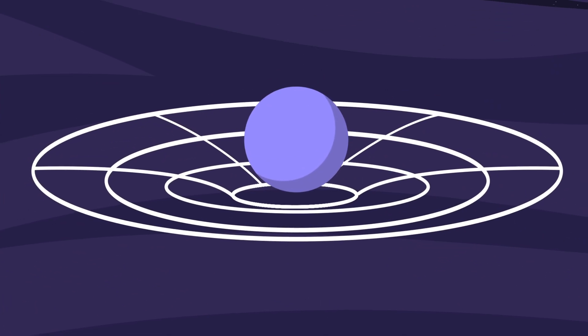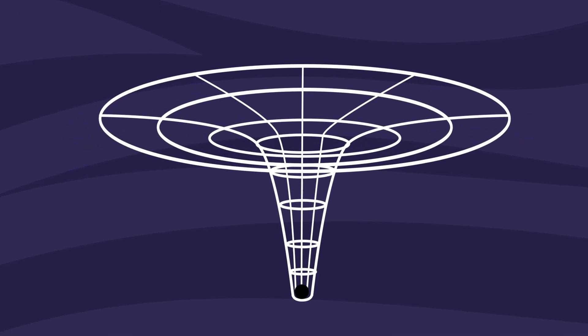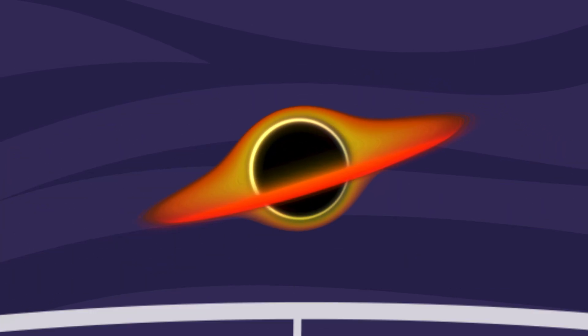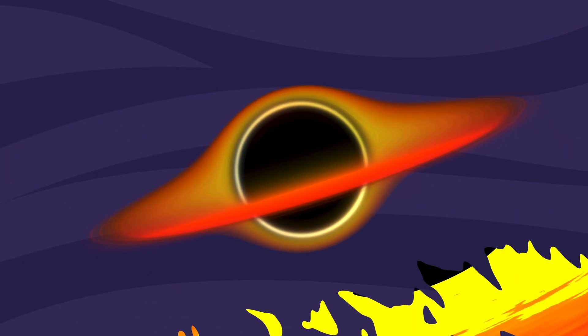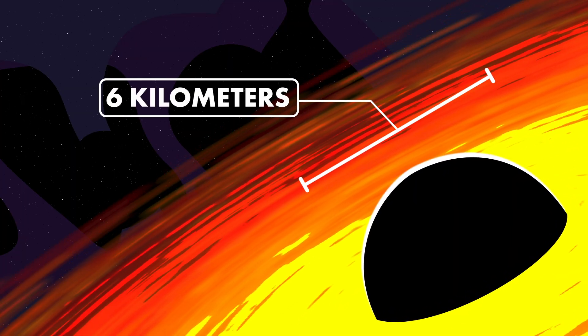When a stellar black hole forms, the original star's mass is condensed by gravity into a tiny singularity. With all that mass compacted into a small area, black holes are some of the densest known objects in the universe. The event horizon of a black hole with one solar mass would stretch just 6 kilometers in diameter.